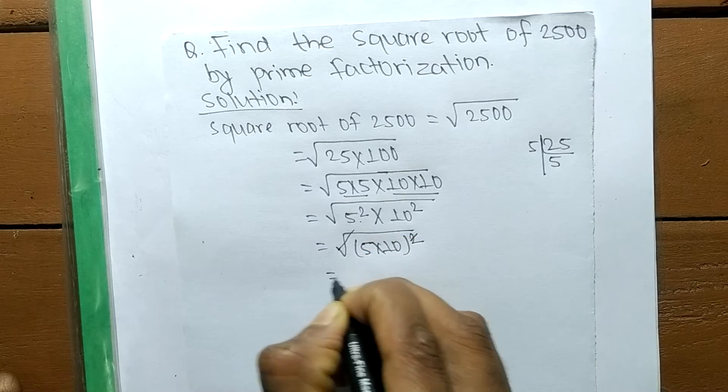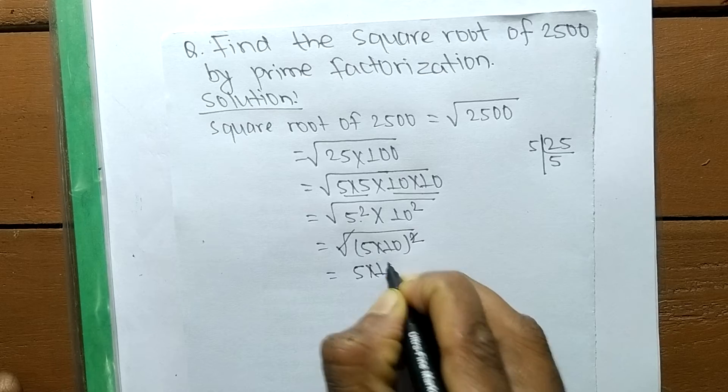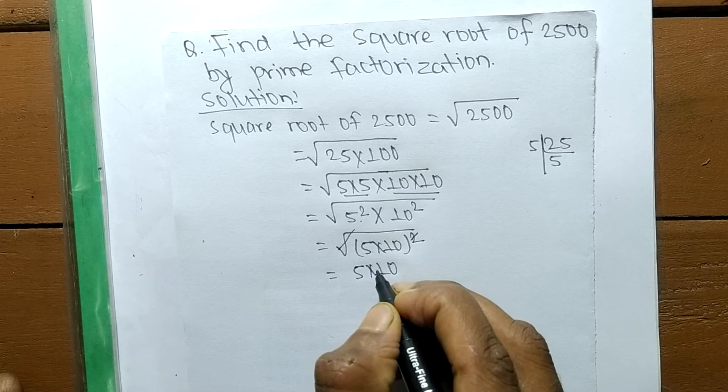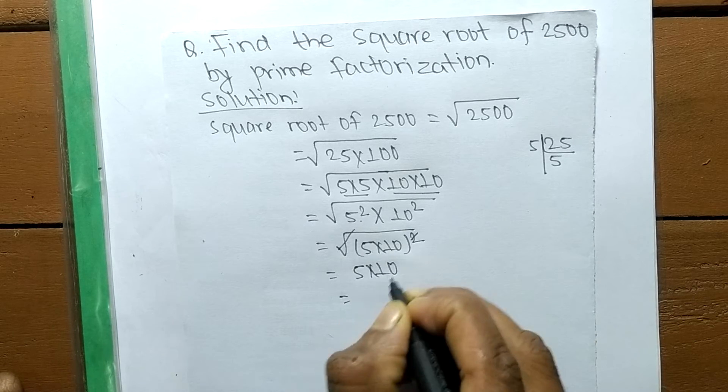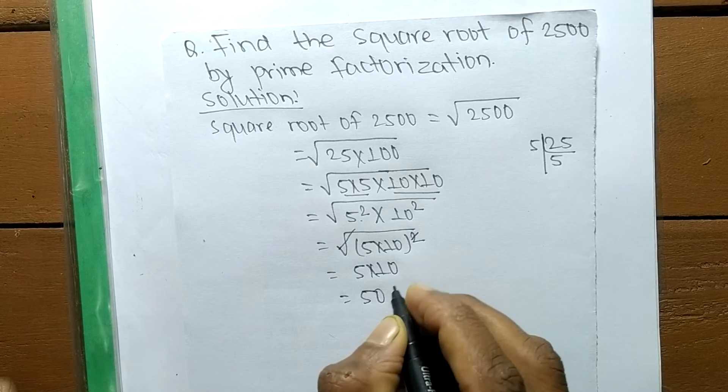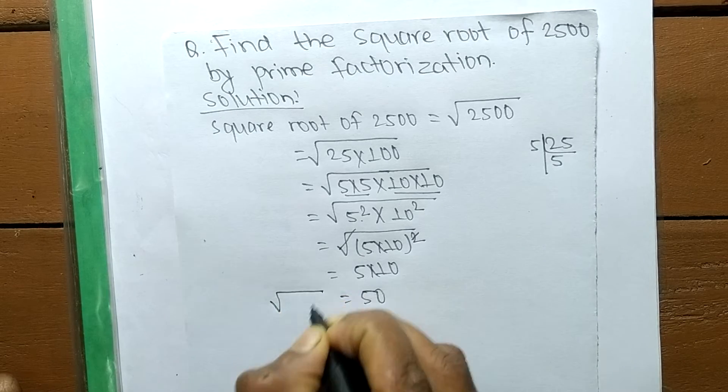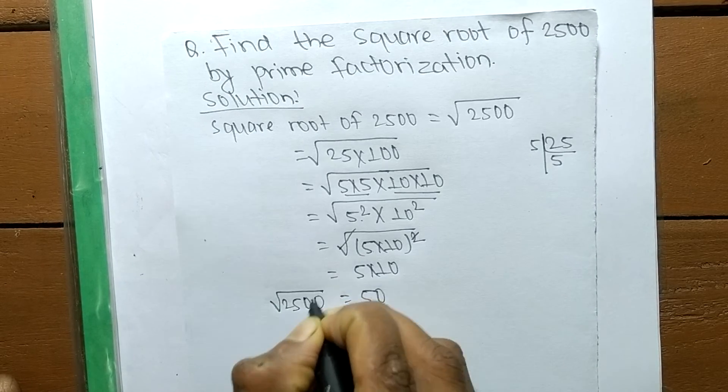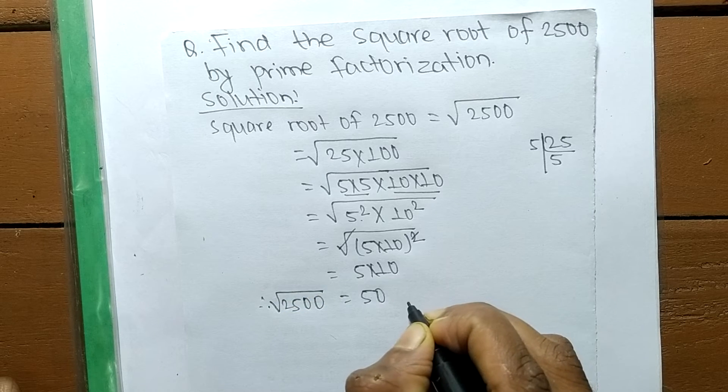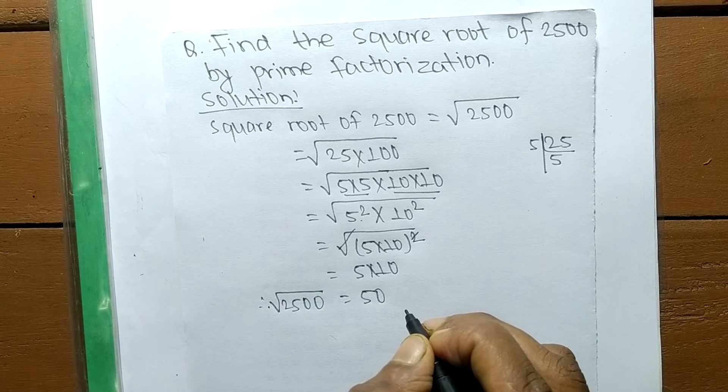5 times 10 means 50. So the square root of 2500 is 50. This is all for today.